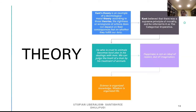Kant's theory is an example of a deontological moral theory. According to these theories, the rightness or wrongness of actions does not depend on their consequences, but on whether they fulfill our duty. This is very much like the Gita's: 'Karmanye vadhikarasthe ma phaleshu kadachana' — that is, you don't look for the consequences, but keep doing your duty.